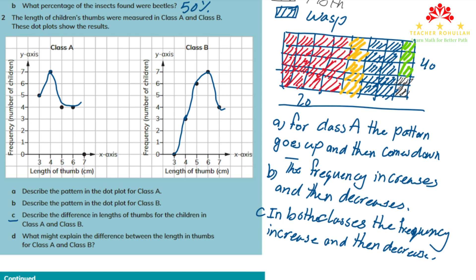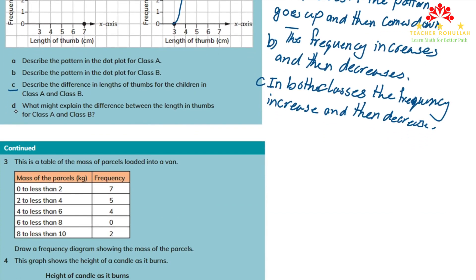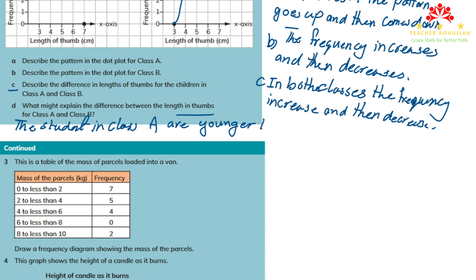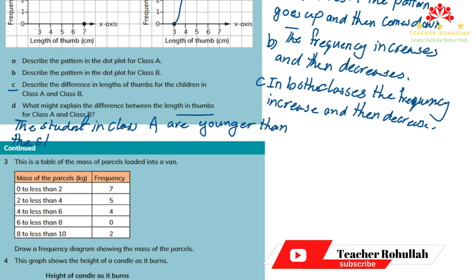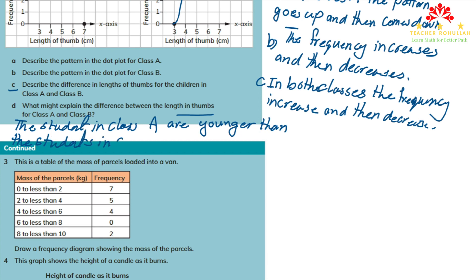Part d asks: what might explain the difference between the thumb lengths in class A and class B? We can say that the students in class A are younger than the students in class B. This is what the dot plot is showing us. We are done with question two.